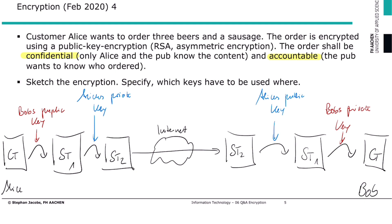What is achieved in this scenario? Let's have a look. The following data security goals are achieved. First, accountability. Why? Because if we use Alice's public key for decryption, then we know Alice's private key has been used for encryption. Alice is the only one who has that key, so she's the one who wrote the letter.